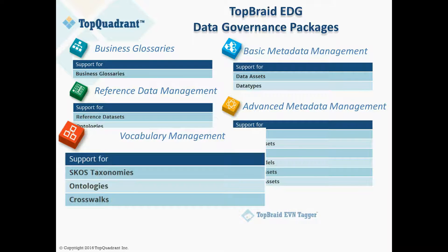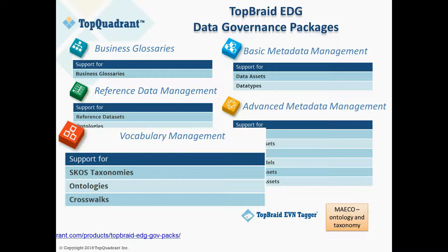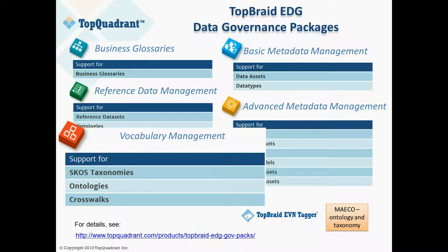We'll also want a rich vocabulary of terms relevant to the domain of the content we want to search. So, we'll use our MAKO ontology and taxonomy of thousands of macroeconomics terms. Together, these elements allow us to automate the semantic tagging of unstructured data.